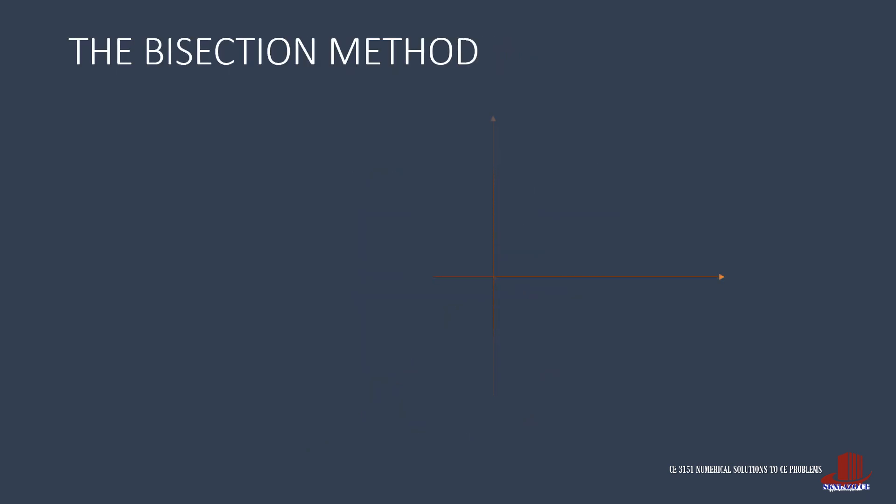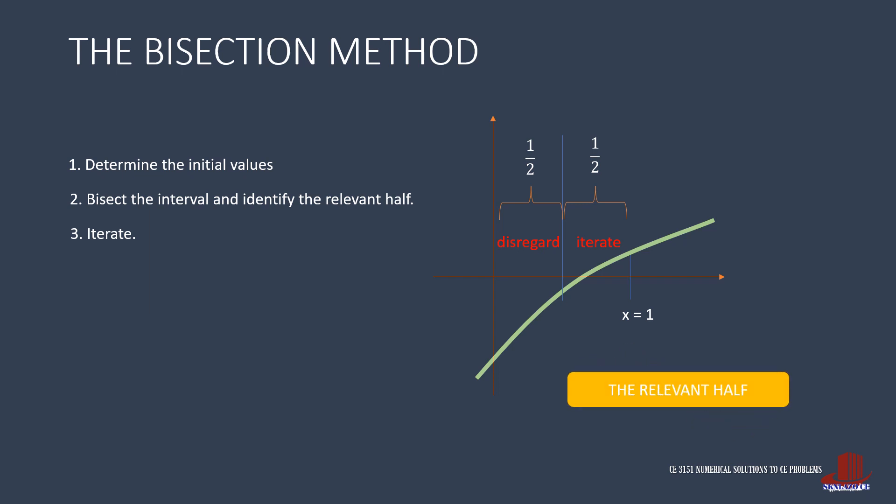The first bracketing method is the bisection solution. Since all methods will have to start somewhere, the determination of initial values will be the same for all the five methods. After learning the initial limits, say we have a curve with a lower limit defined at x equal to 0 and its upper limit is at x equal to 1. The bisection method moves to figure half of the interval, and then find which half is relevant. Thus, the relevant half will be disregarded, and the half where the intercept is located will be iterated further. In short, bisection method uses the relevant half.